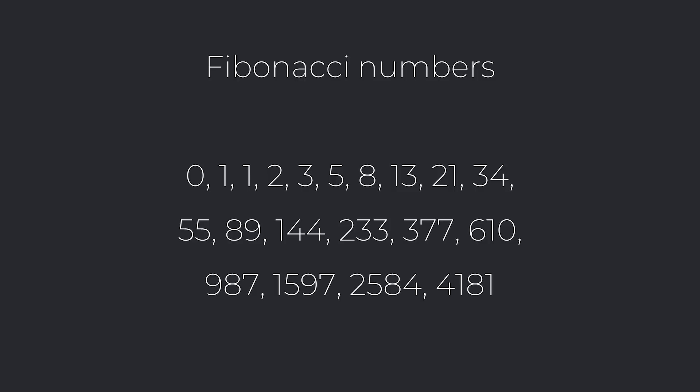These are the Fibonacci numbers. It's a series of numbers that goes on forever, and the way it works is you add the preceding two to get the third — so zero and one is one, one and one is two, two and three is five, and so on.